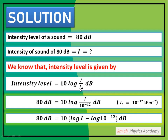تو I₀ کی value ہوتی ہے 10⁻¹² وارٹ پر میٹر سکوائر۔ یہ وہ faintest intensity ہے جو human ear سن سکتا ہے۔ intensity level ہمیں given ہے 80 dB، تو ہم 80 dB کی value لگا لیتے ہیں۔